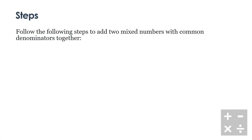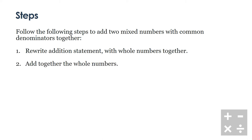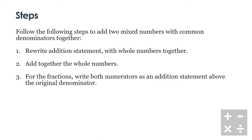Let's quickly review the steps. Follow the following steps to add two mixed numbers with a common denominator together. First, you're going to rewrite your addition statement with the whole numbers together. Second, add together the whole numbers. Third, for the fractions, write both numerators as an addition statement above the original denominator.